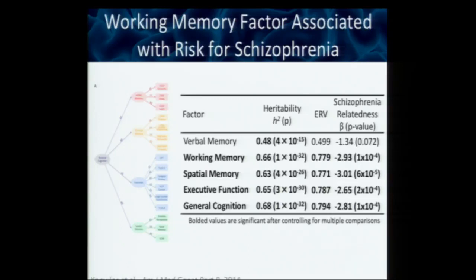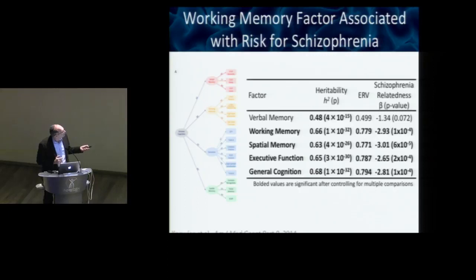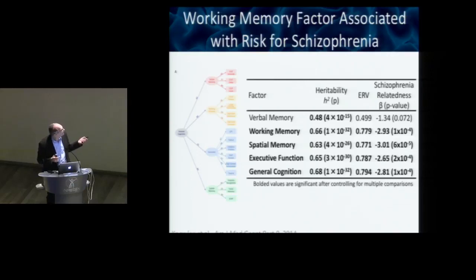We did a genetic principal components analysis, taking all cognitive measures in our Genetics of Brain Structure and Function sample and calculating the genetic correlations between each one. We came out with factors like verbal memory, working memory, spatial memory, executive functions, and general cognitive ability. All were highly heritable, and four were genetically associated with liability for schizophrenia using the mean-based test. Working memory had a very strong effect.